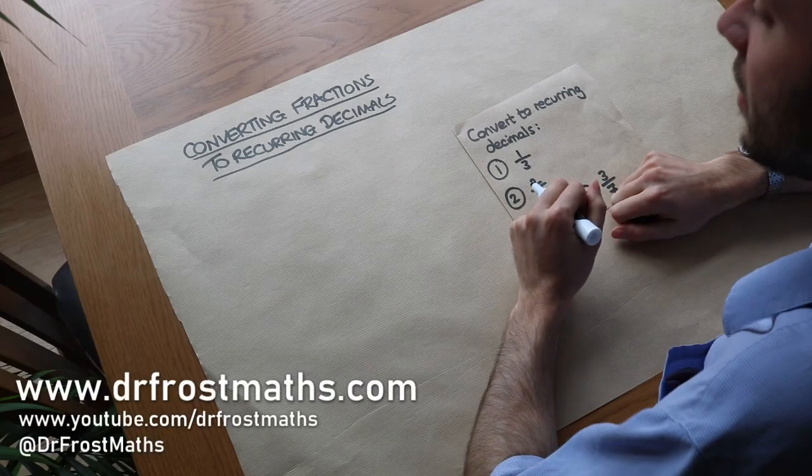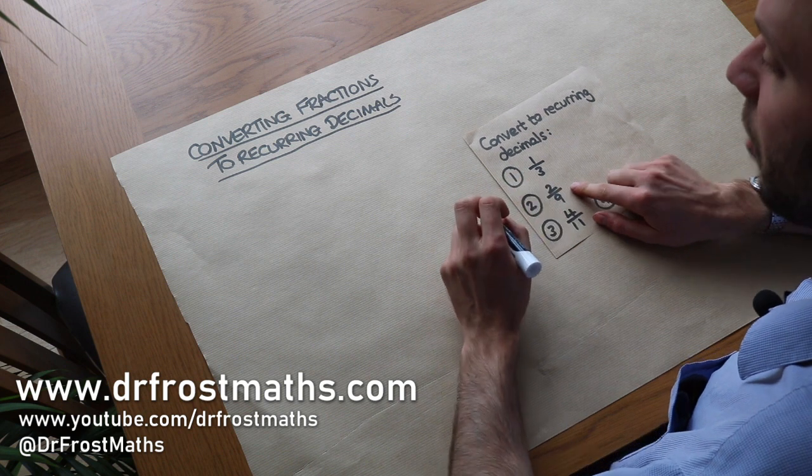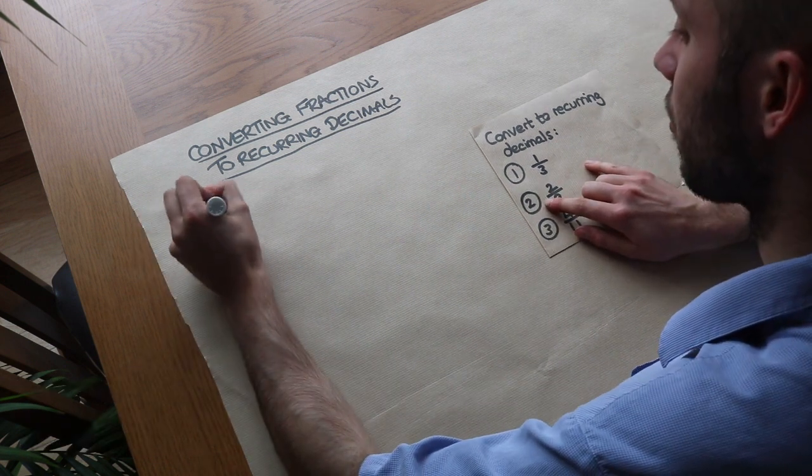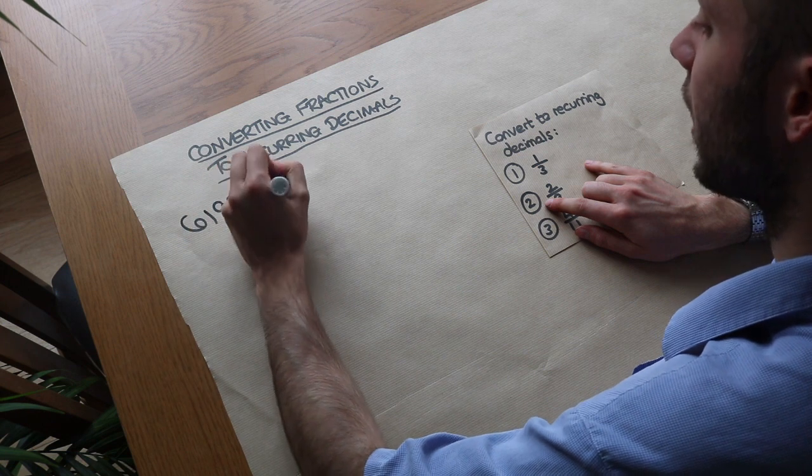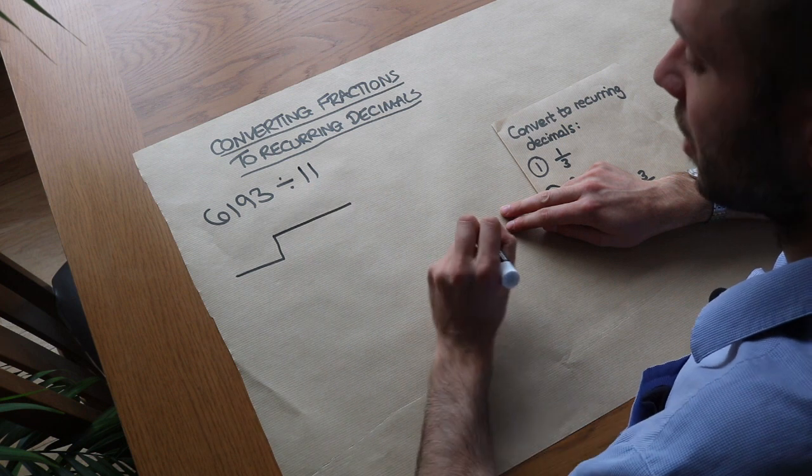Hello and welcome to this video on converting fractions to recurring decimals. Now just to remind you of how we actually do normal division, if we say had 6193 and we were trying to divide it by 11, then we can use something called short division.